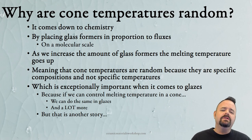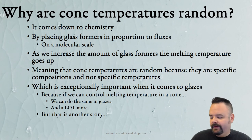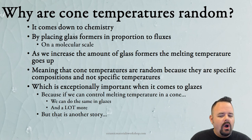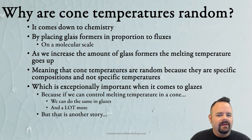So back to the question: why are cone temperatures random? It comes down to the chemistry. By placing our glass formers in proportion to our fluxes on a molecular scale, and increasing the amount of glass formers in proportion to the fluxes, the melting temperature goes up. Cone temperatures are random because they reflect specific compositions and not specific temperatures — which is exceptionally important when it comes to glazes. Because if we can control the melting temperature in a cone, we can do the same to glazes. That's the entire principle behind the Unity Molecular Formula. And we can also control texture, crazing, fix glaze flaws, and fix durability — it's all hidden in the UMF.